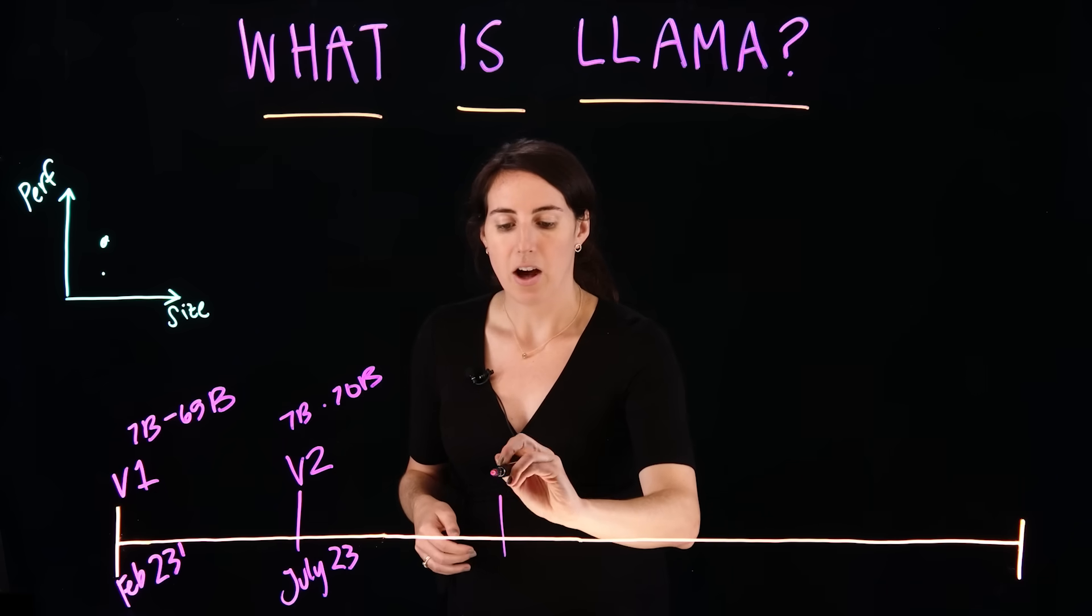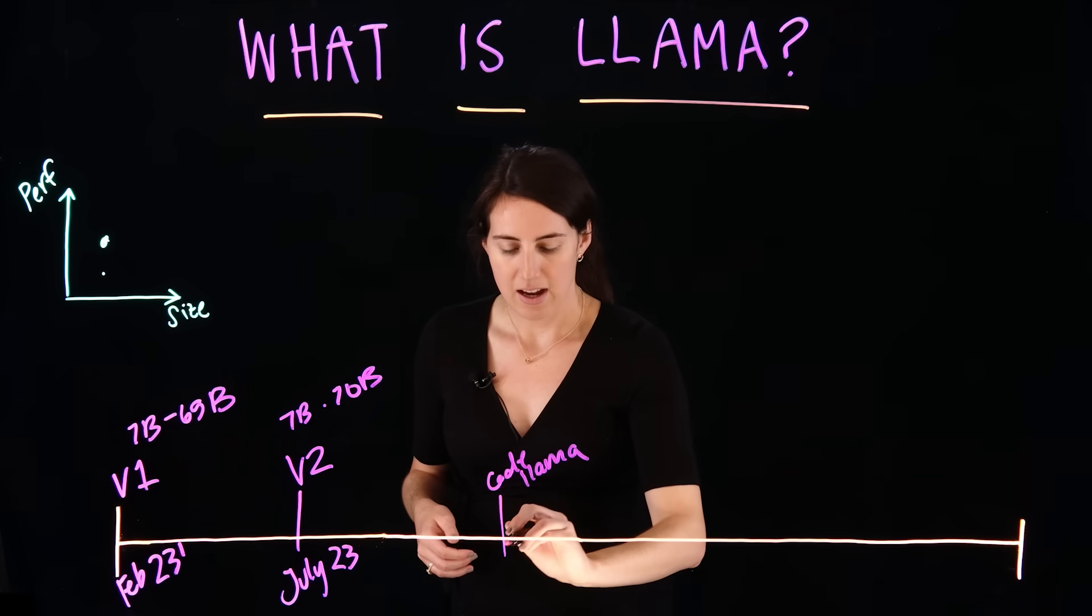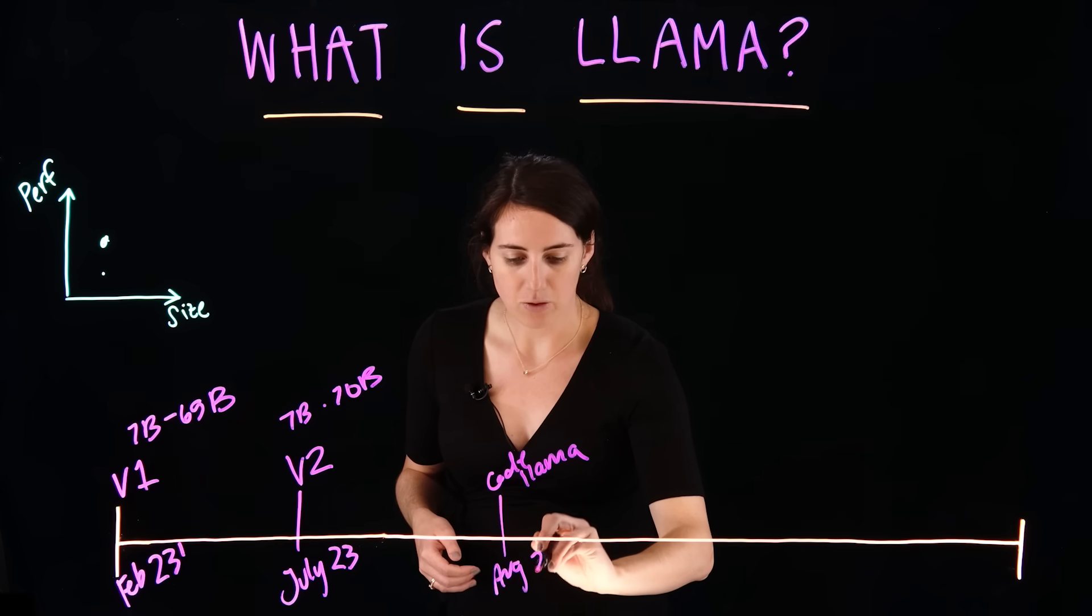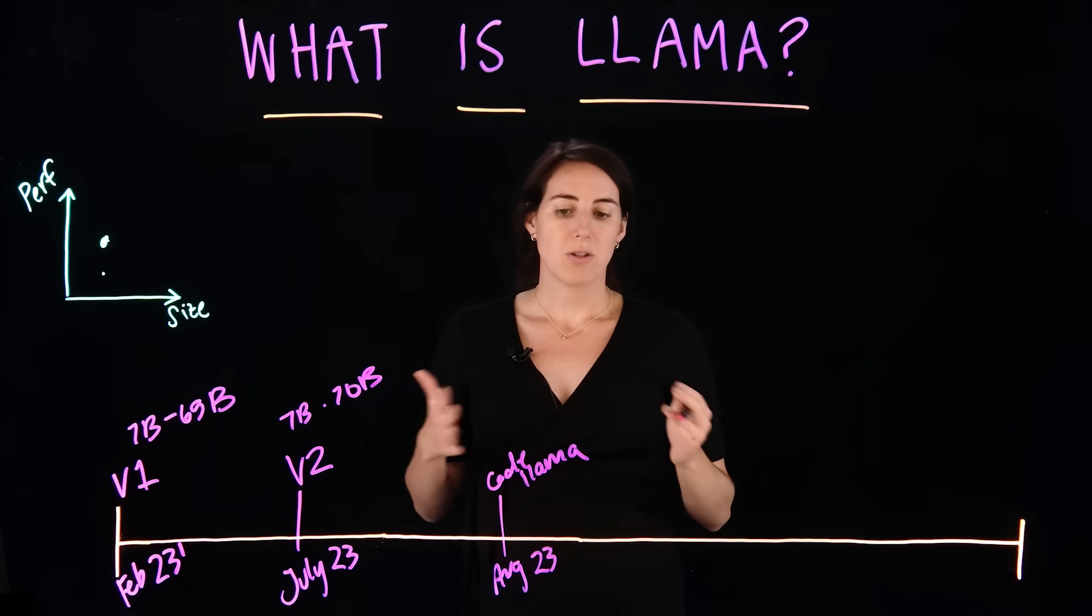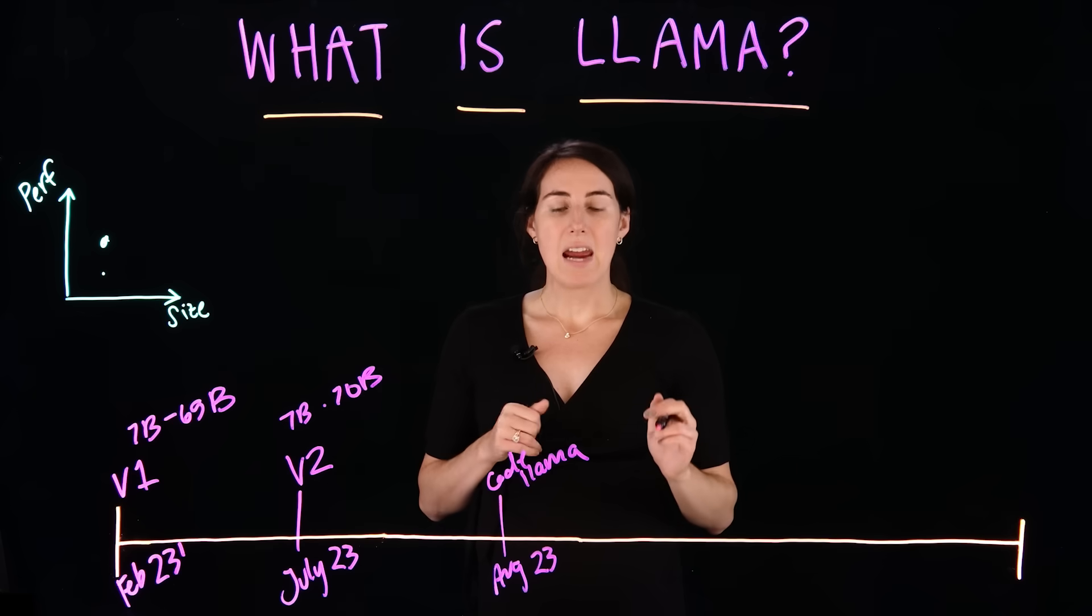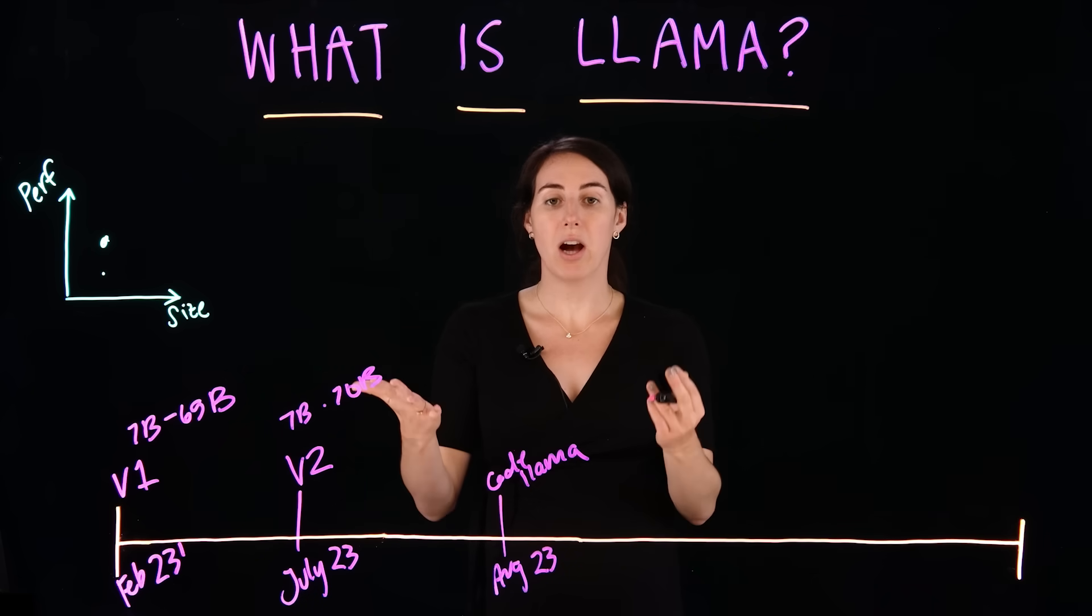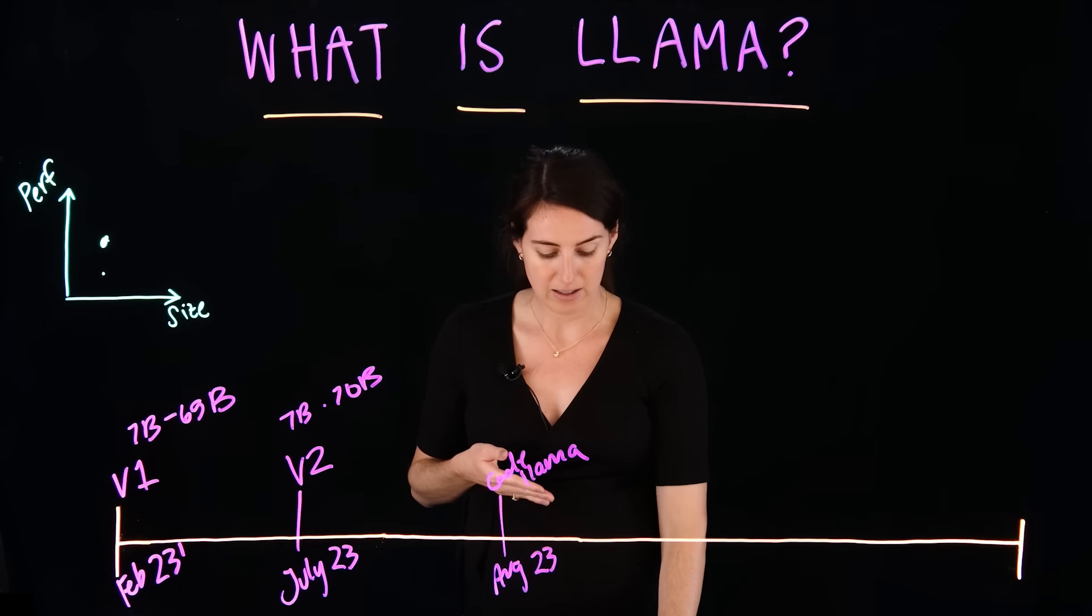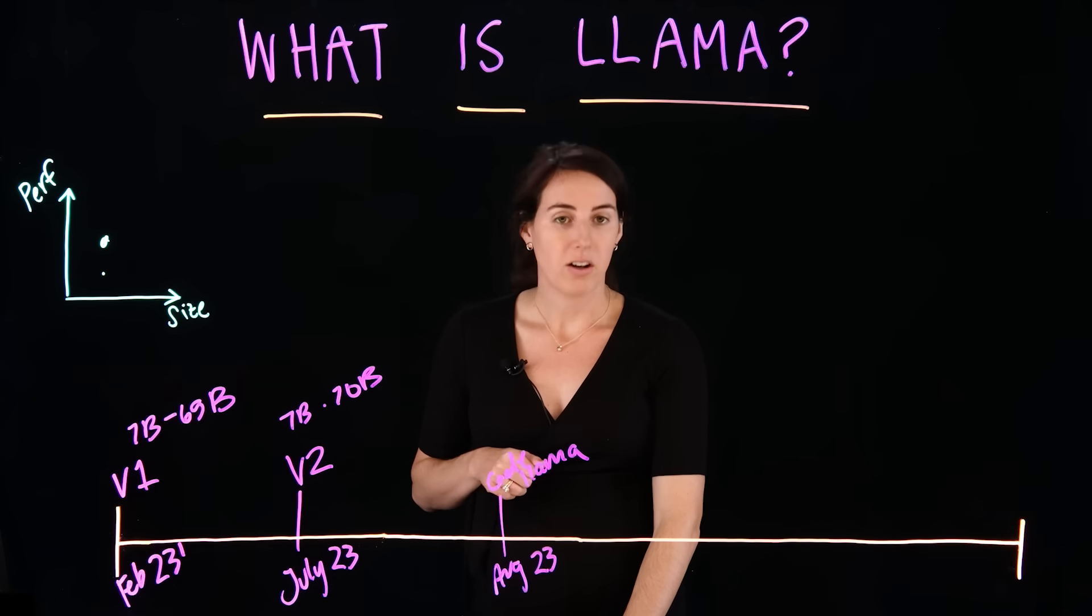So, we had a Code Llama release in August of 23. And these were code models specifically. So, more domain-specific models than the prior models released. And one of them focused on Python. So, very helpful for developers out there that want to use open-source models for code development.